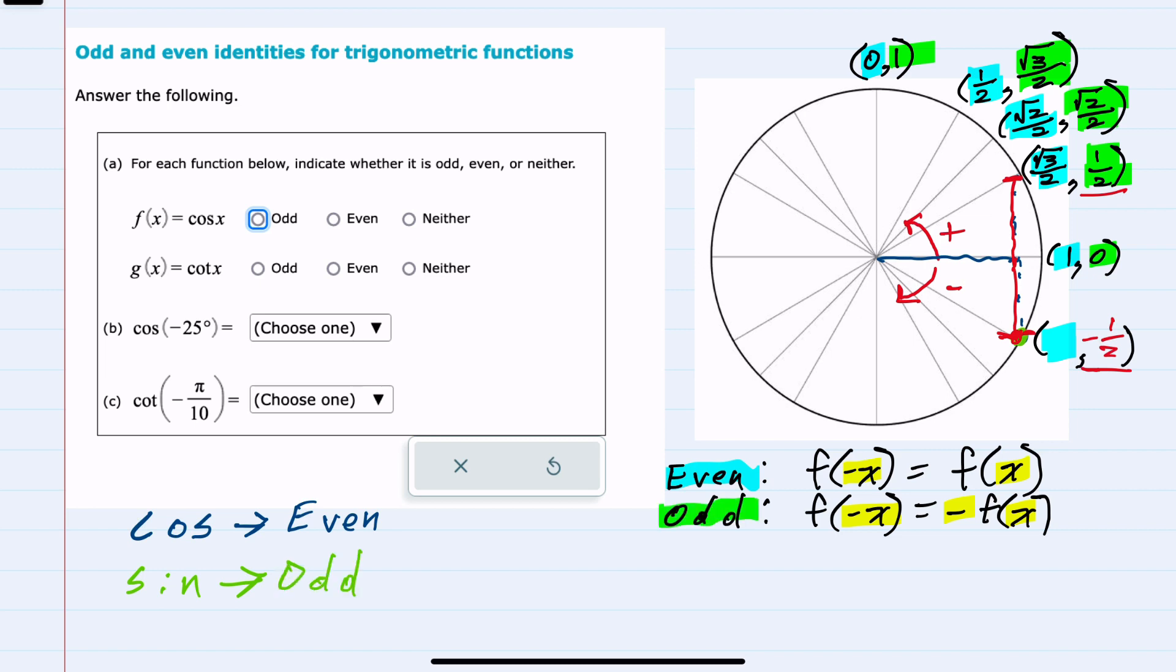From here, knowing cosine and sine, we can start to answer the questions. The first question is actually about cosine. And we've said cosine is even.